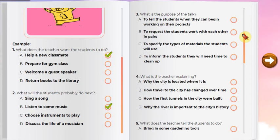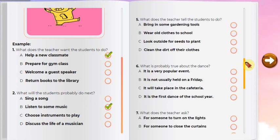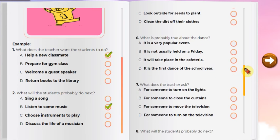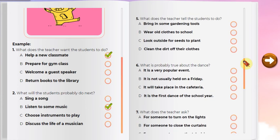Number five. Listen to a teacher talking to his class. Tomorrow we'll be planting trees in the park. A few dozen saplings will be provided and you'll be given gardening tools to dig holes for the trees. One important thing to remember: gardening involves working with dirt, so don't come to school in nice clothes. Make sure to dress in something old, something you wouldn't mind getting dirty. What does the teacher tell the students to do?